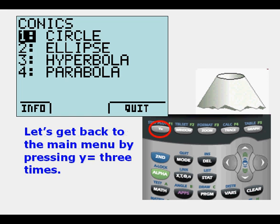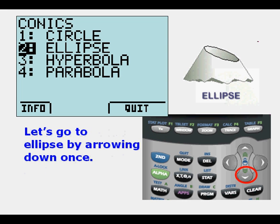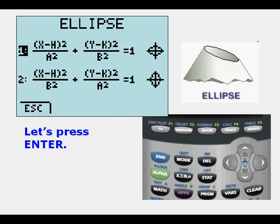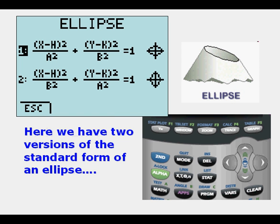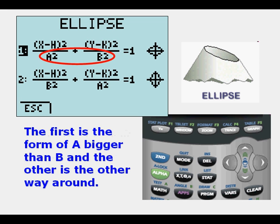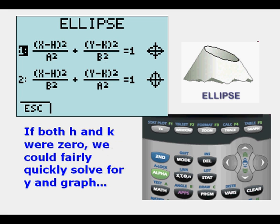Let's get back to the main menu by pressing Y equals 3 times. We scroll down once to Ellipse and press Enter. We see this view. We have two versions of the standard form of an ellipse. The first is the form with A bigger than B and the other is the other way around.